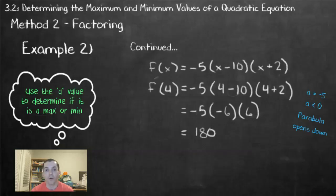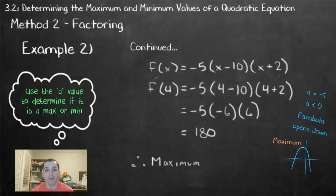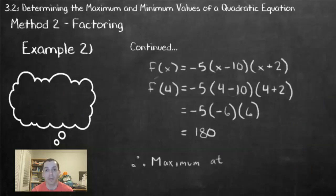This is the y-coordinate of the vertex. So we have our maximum or minimum point — we just decide if it's a maximum or a minimum. Given our a value is negative, this will be a maximum point, as the parabola will open down, and that will occur at the point (4, 180).